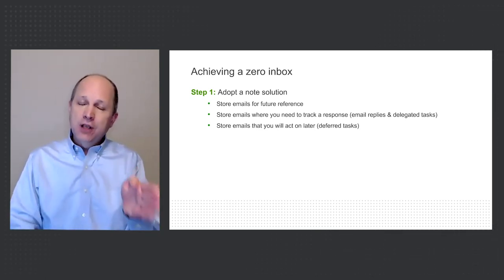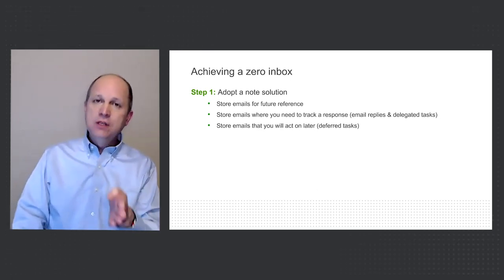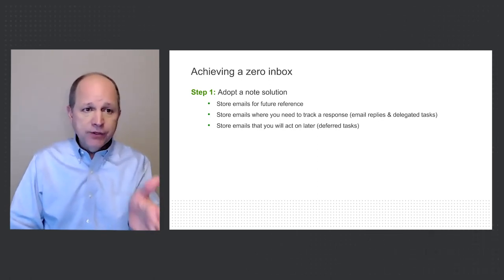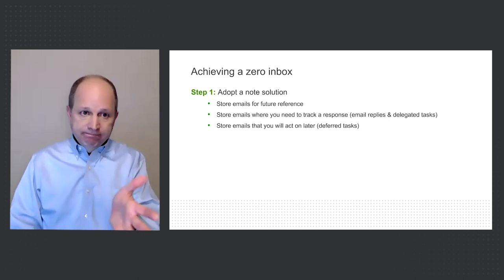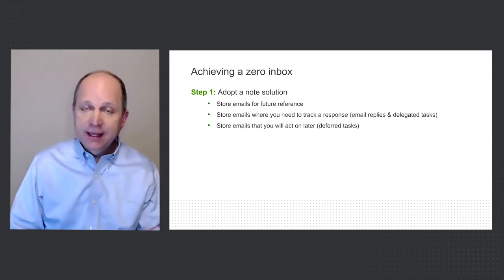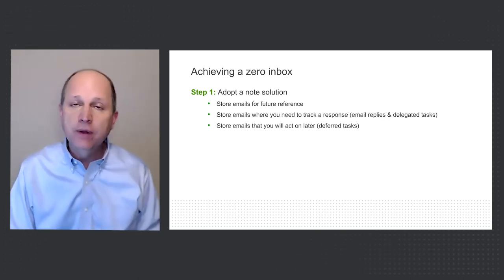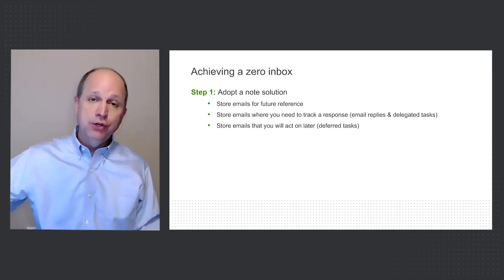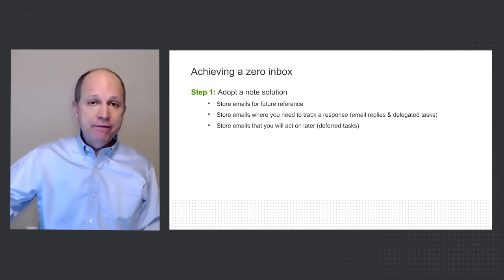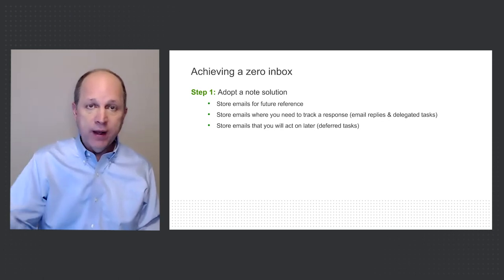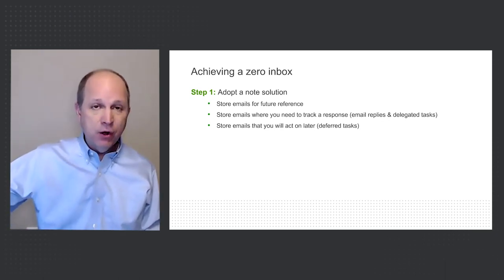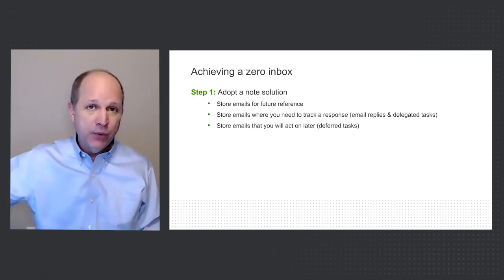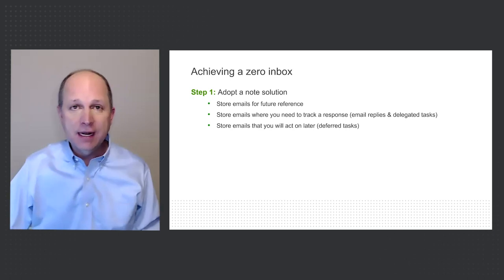But don't let the note solution be its own form of data prison — share the notes whenever possible with the rest of your team. Store emails where you need to track a response, email replies, and delegated tasks. Store emails you'll act on later as deferred tasks. You could push those to Microsoft Tasks or Google Tasks, but since you're using OneNote or Evernote, just have three different buckets: temporary holding space, a space where you're waiting for someone else to act, and one for things you'll get to next week. Three little buckets — send your emails over and get them out of your inbox.